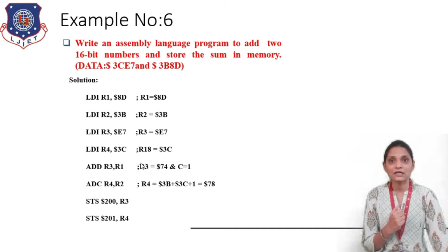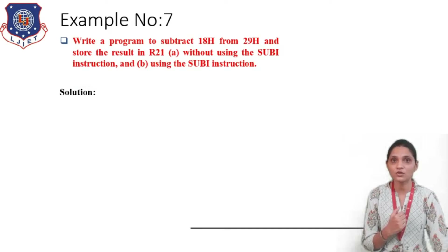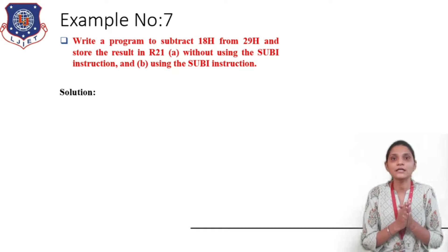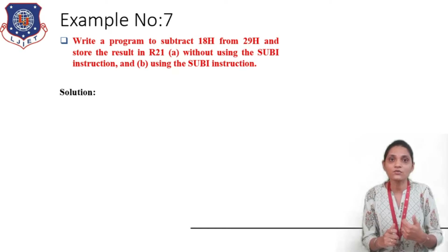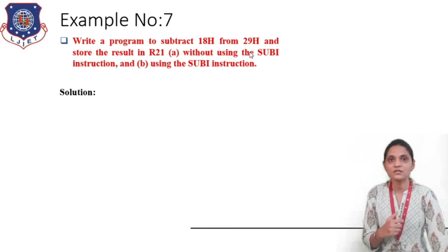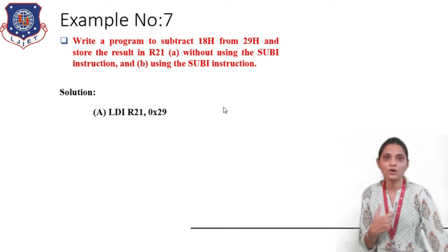Next we will see another example in which we have to write the program for subtraction of 18 hex from 29 hex, and we have to store the result in register R21. We have to perform this operation in two ways: first without using the SUBI instruction, and second with using the SUBI instruction. The SUBI instruction is subtract with immediate data, where you provide the immediate data which you want to subtract from the first register.